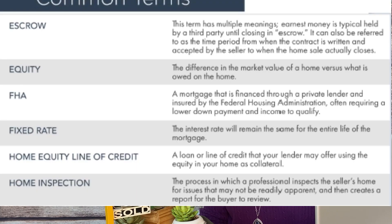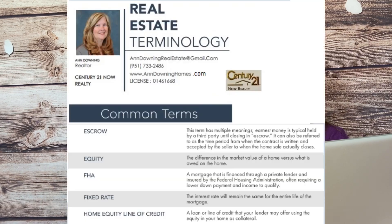FHA: A mortgage that is financed through a private lender and insured by the Federal Housing Administration, often requiring a lower down payment and income to qualify. Home Equity Line of Credit: A loan or line of credit that your lender may offer using the equity in your home as collateral.